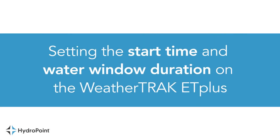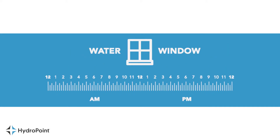Let's set the start time and water window duration on your WeatherTrack ET Plus. The water window is a user-defined window of time when irrigation can occur on a given day. The program the controller calculates may be shorter or longer than that window. If the watering time needed is longer than what's available, it will be carried over onto the next watering day.